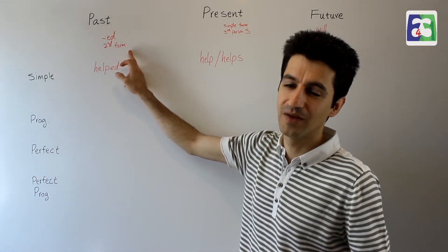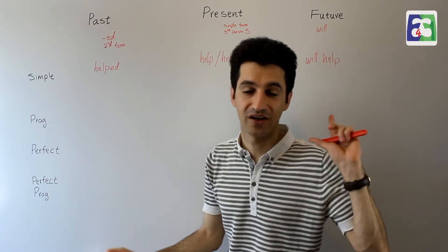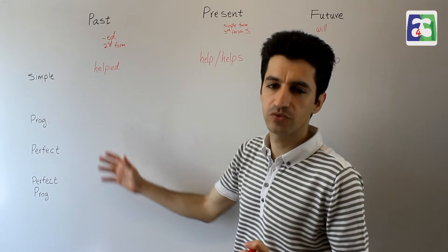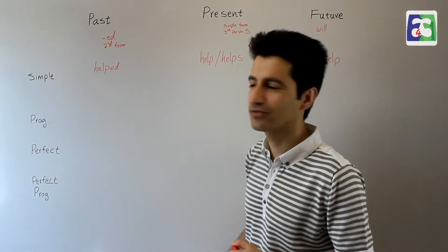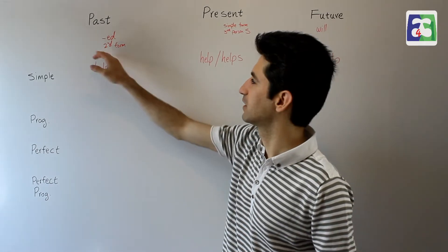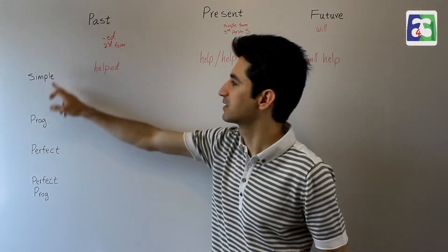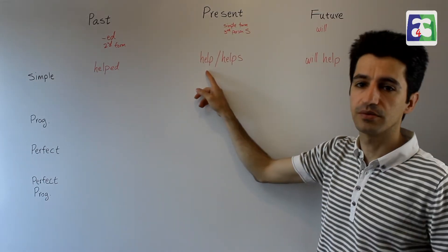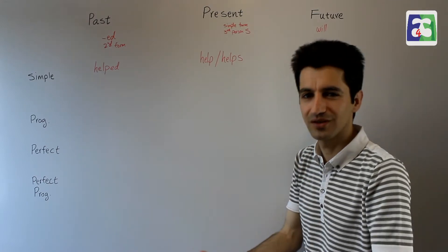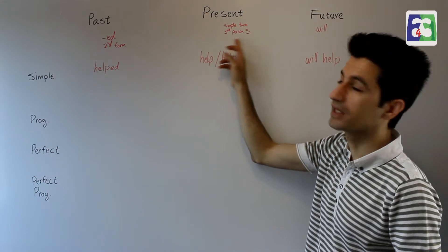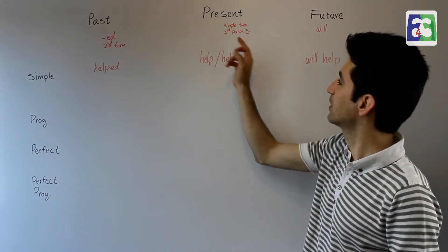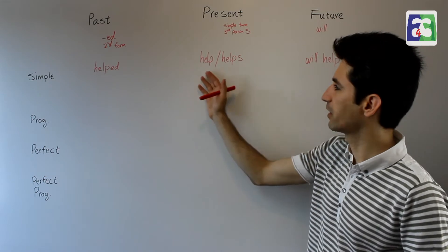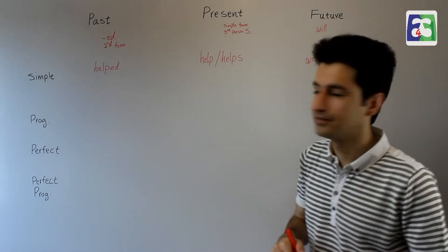I have a list of them in one of my videos - if you want to check that, you can do so by clicking on the I in this corner. So 'help' coming here changes to 'helped.' If my verb is an irregular verb, then we do not have ED and we have to use the second form - let's say my verb is 'go,' then the second form of go, which is 'went,' is the simple past. Coming to simple present, we need to use the simple form of the verb: 'I help' means something that happens regularly, every day. But if I am talking about he, she, or it - third person singular - I need to add S, so 'she helps.' So that's past. These two are present.